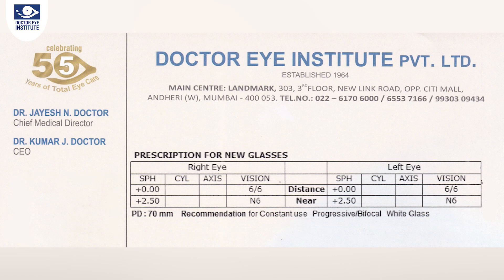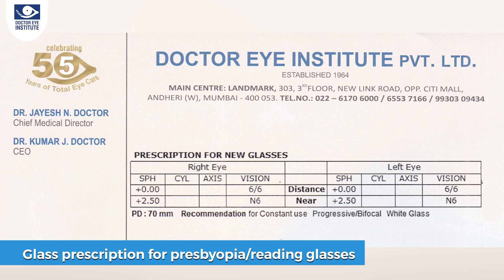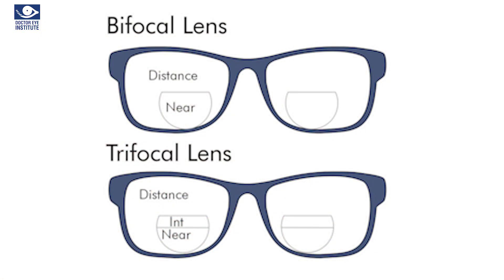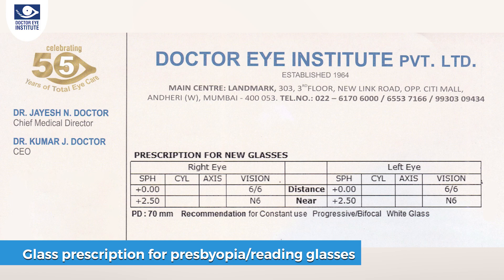The last prescription in this series is for presbyopia, which is reading glasses. The right eye near prescription is plus 2.5, and the left eye is also plus 2.5. The distance number is entirely zero in both eyes, meaning this patient only needs reading glasses for near work — either progressive glasses or reading glasses — and has normal 6/6 distance vision, requiring no glasses for driving, television, or movies.